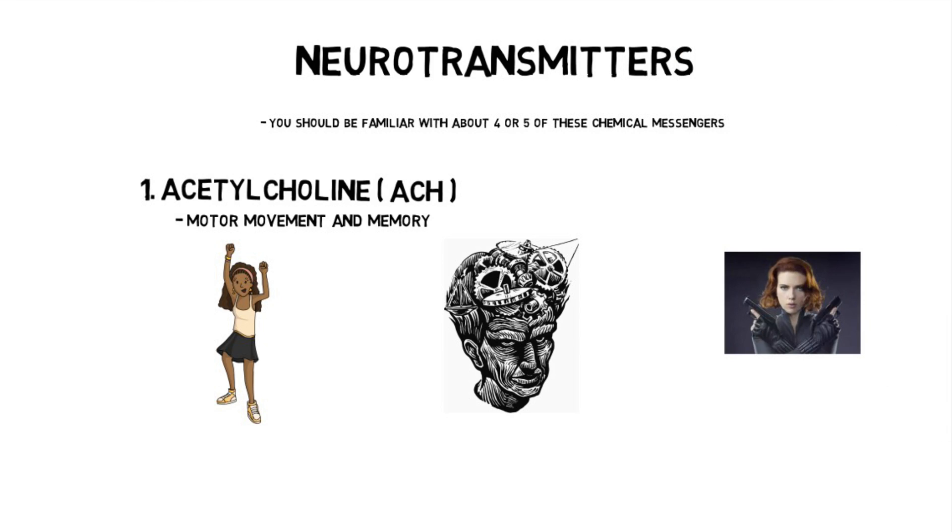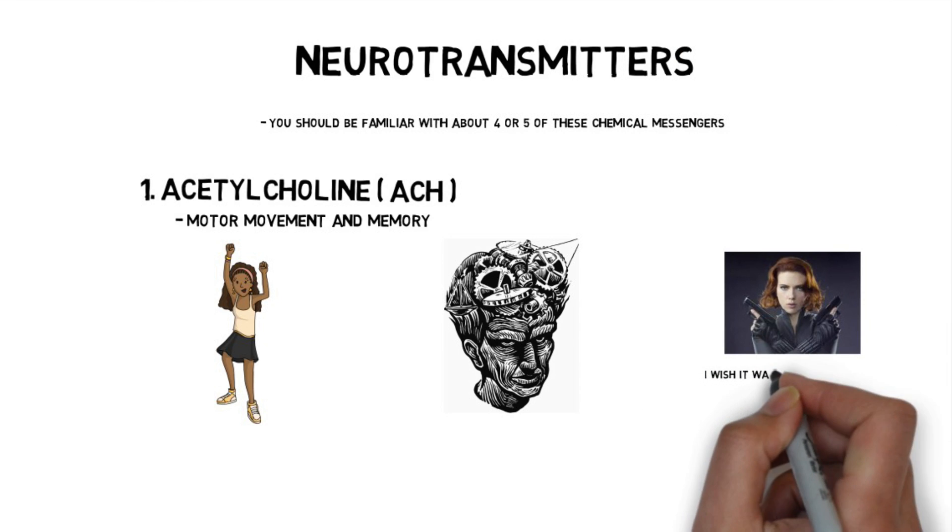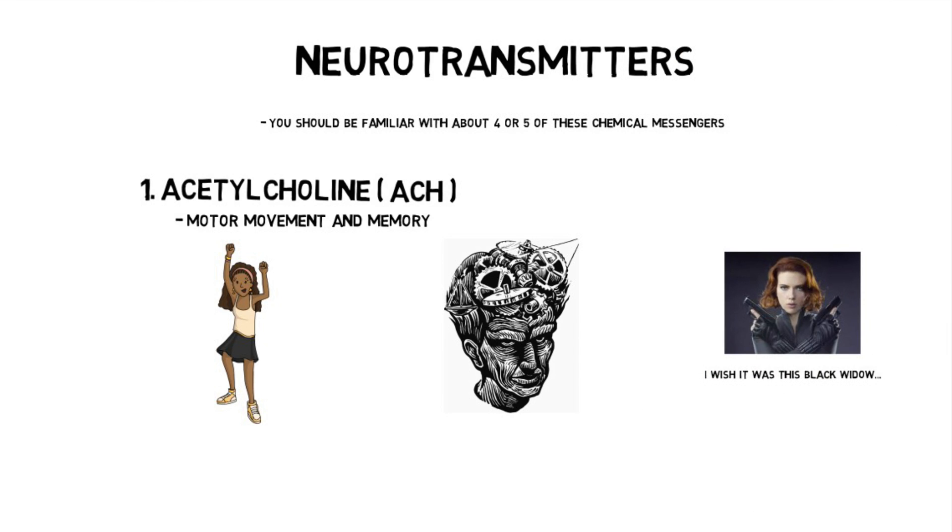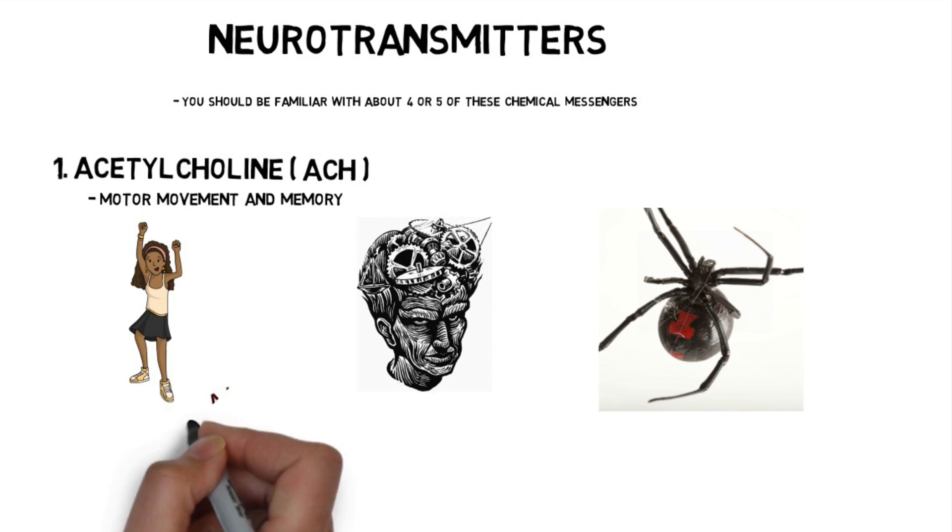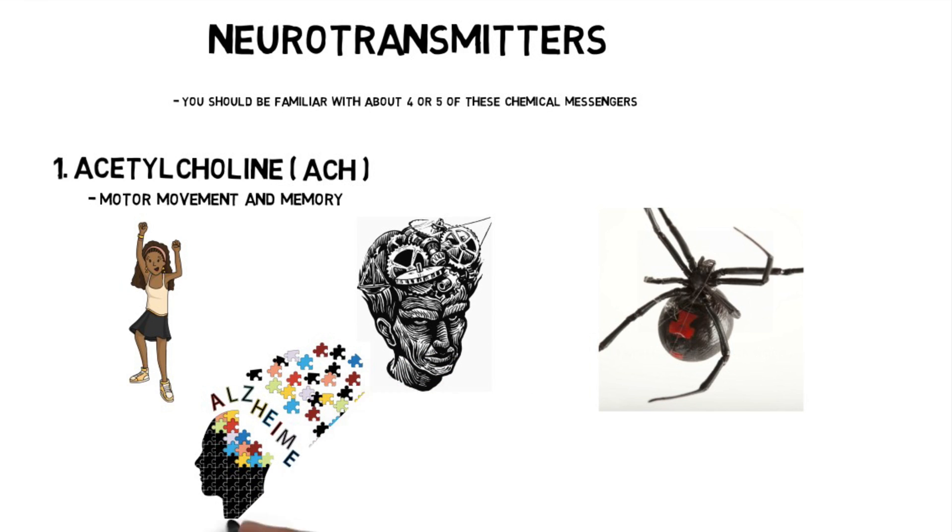And this neurotransmitter is involved in voluntary motor movement and memory. So every time you move your body, you're actually firing acetylcholine in the synapse between our neurons. A good practical example would be the black widow spider. The venom from a black widow spider increases acetylcholine production in our brain to the point where we'll start seizing because we can't control all the voluntary muscle movement. Lack of acetylcholine has also been linked to diseases such as Alzheimer's.